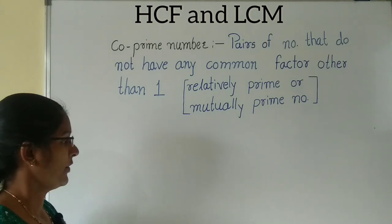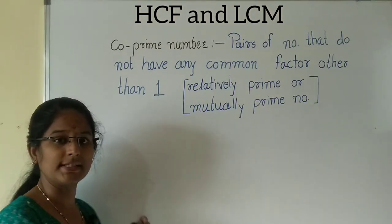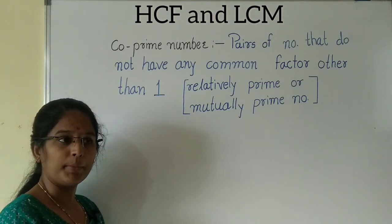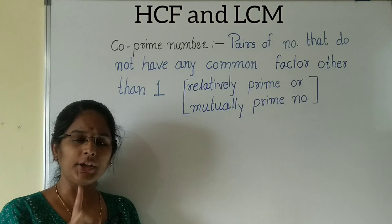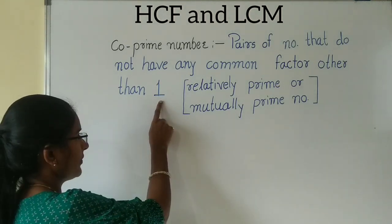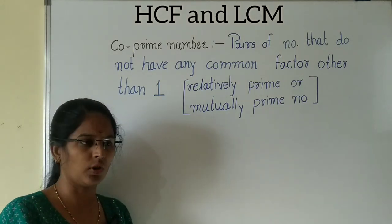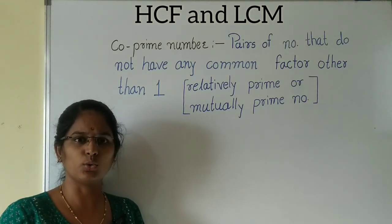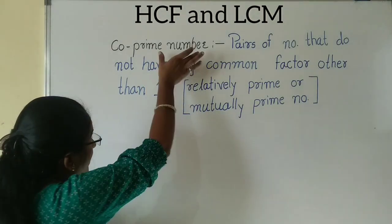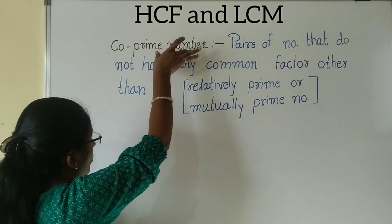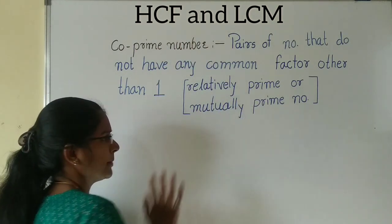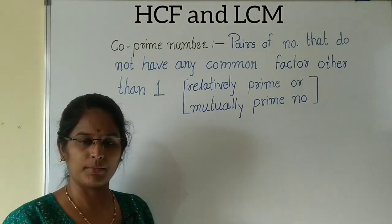When we find the factors of these numbers, there are factors, but in those factors only 1 is the common factor — not any other numbers like 2, 3, or 4. That time we say this is a co-prime number. Co-prime number is also called a relatively prime number or mutual prime number.